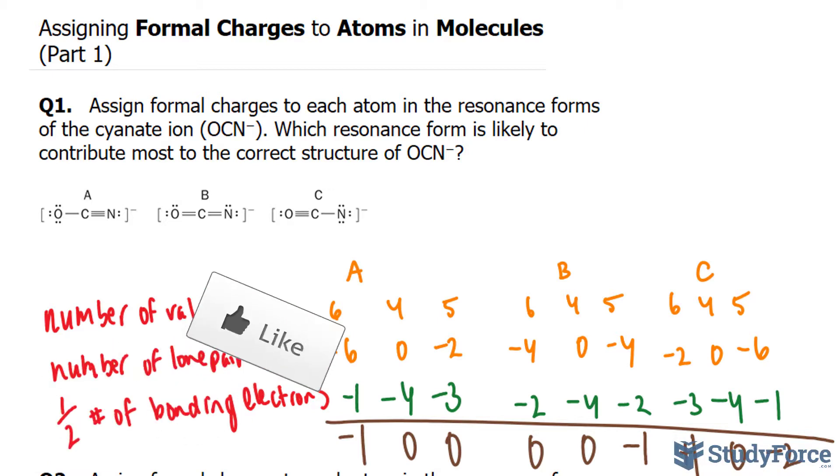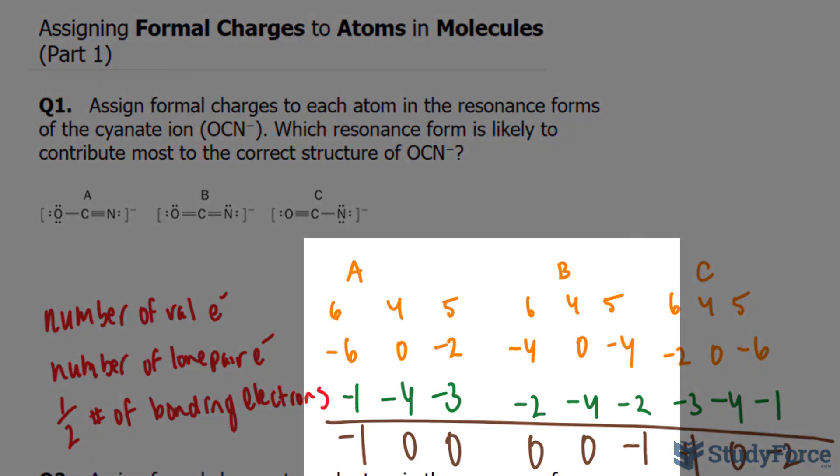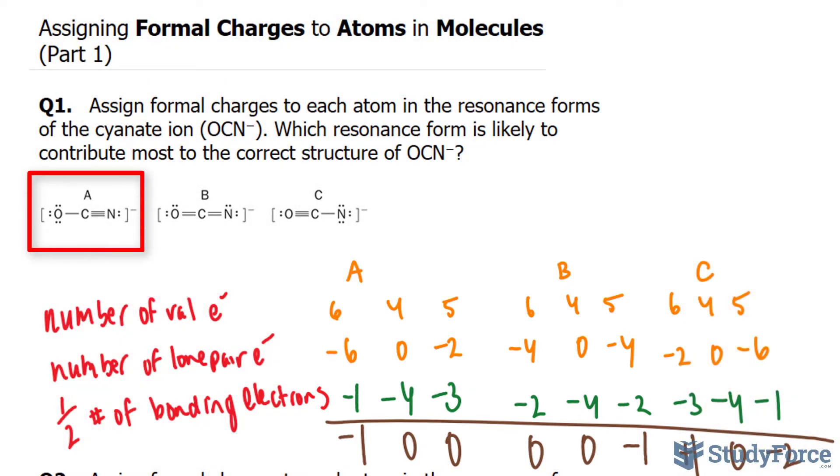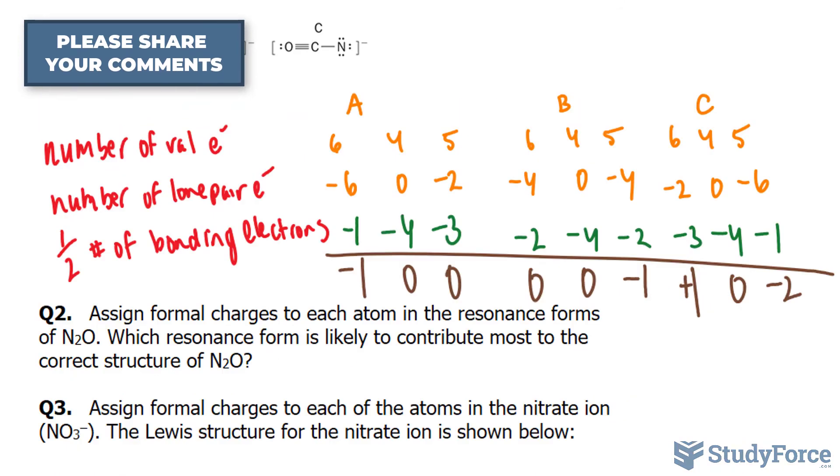The sum of all formal charges for each structure is negative 1, as you can see on the resonant structure, as it should be for a negative 1 ion. Structures A and B have the least amount of formal charge, and therefore preferable over structure C. On the contrary, structure A is preferable to structure B because it has the negative formal charge on the most electronegative atom, which is oxygen. Thus, we expect structure A to make the biggest contribution to the resonance form of the cyanate ion.